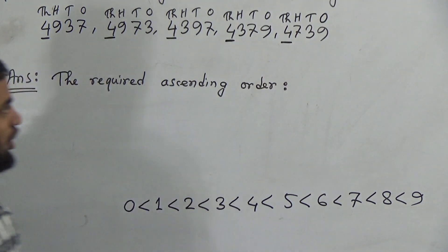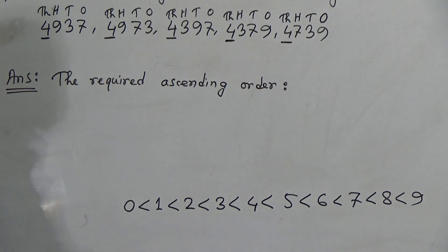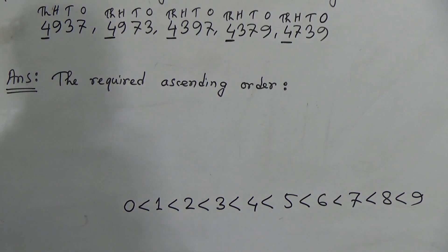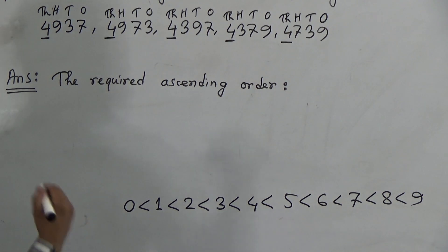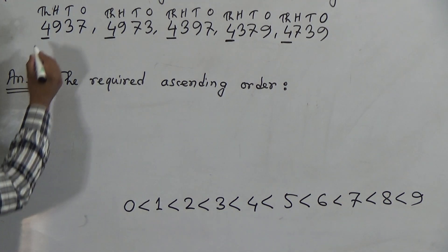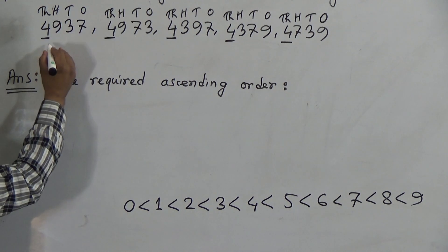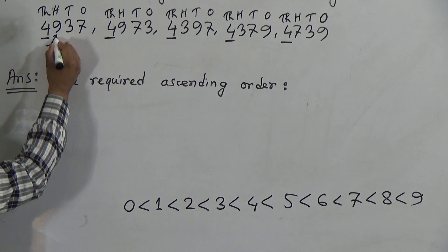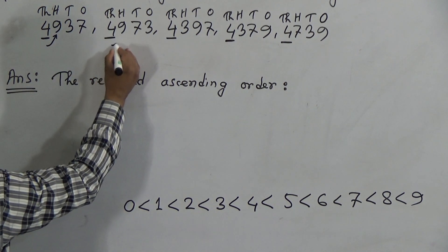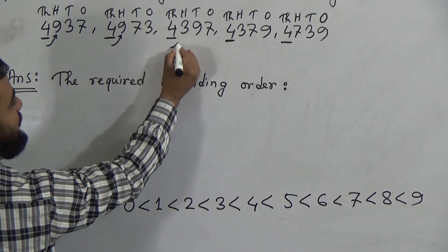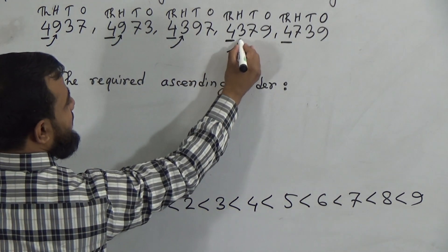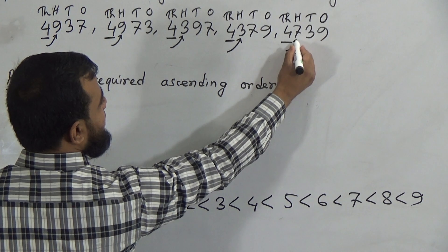So, to identify the smallest number, go to the next step — that means notice the next highest place, which is the 100's place. Now, the 100's place has 9, 9, 3, 3, and 7 for the five numbers. Between these five digits, 3 is the smallest. But look — there are two numbers with 3 in the 100's place.